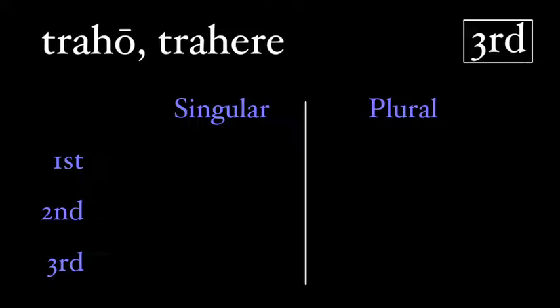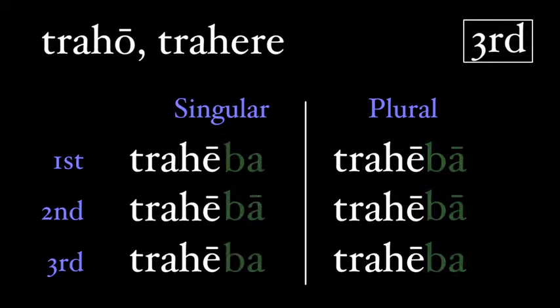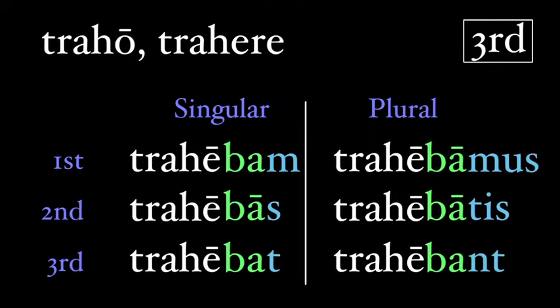The third conjugation ends its present infinitive in a short '-ĕre', like 'traho, trahere.' We do the same steps — our present stem is 'trah', but notice that the 'e' becomes long. Then the 'ba', and then our personal endings: trahebam, trahebas, trahebat, trahebamus, trahebatis, trahebant.